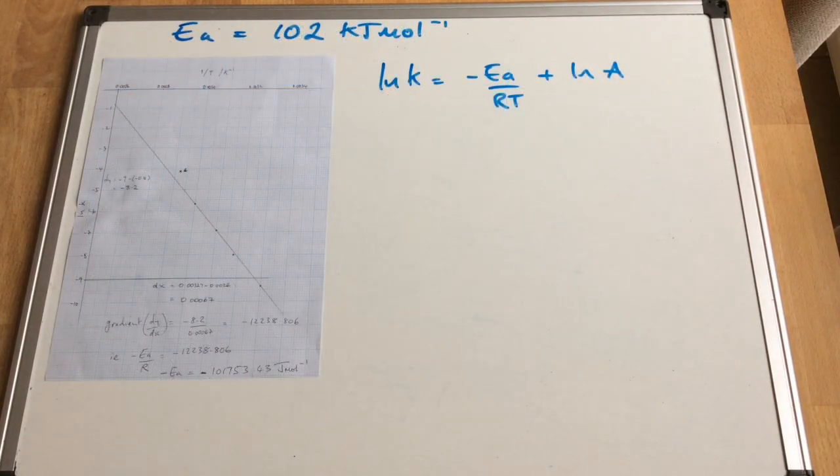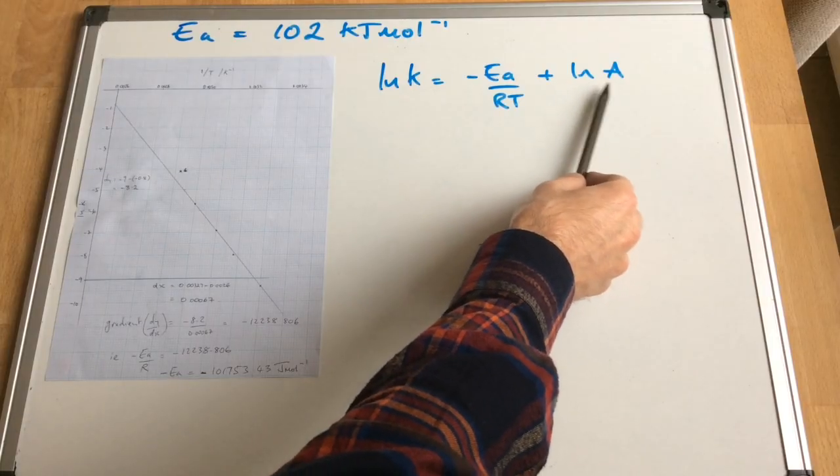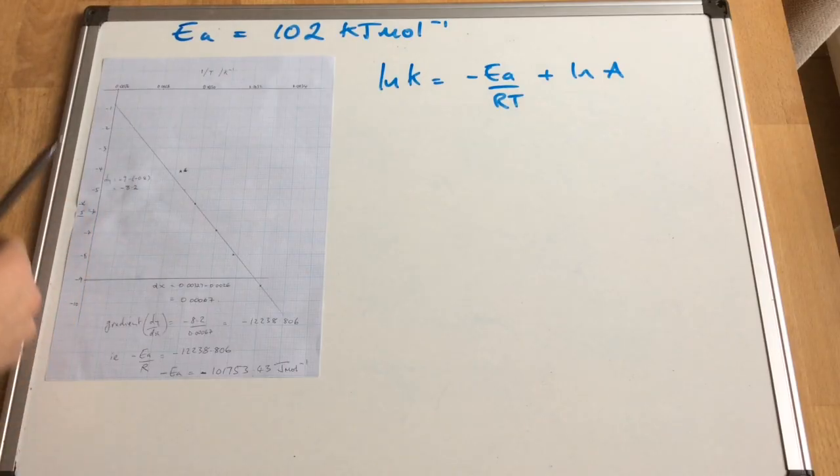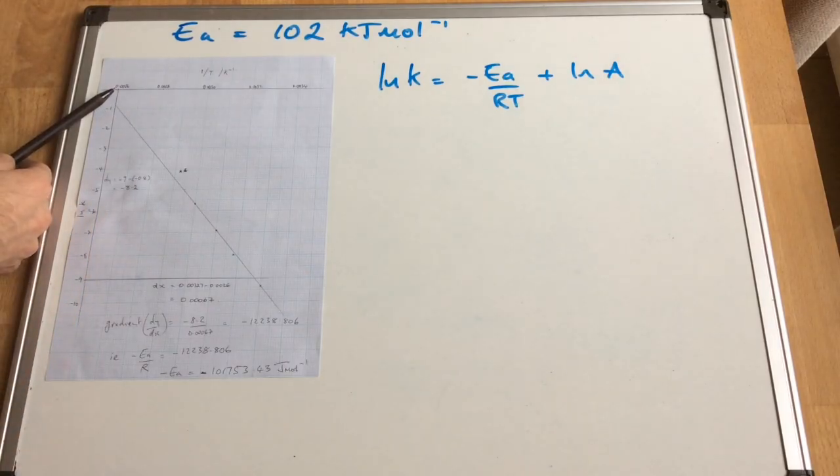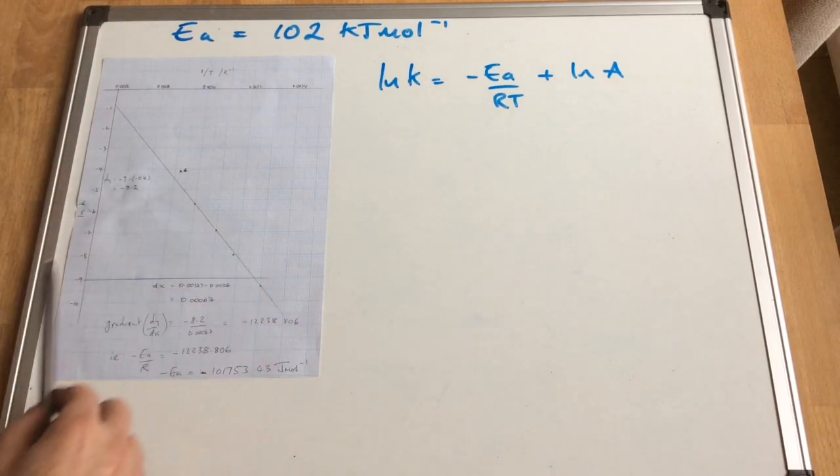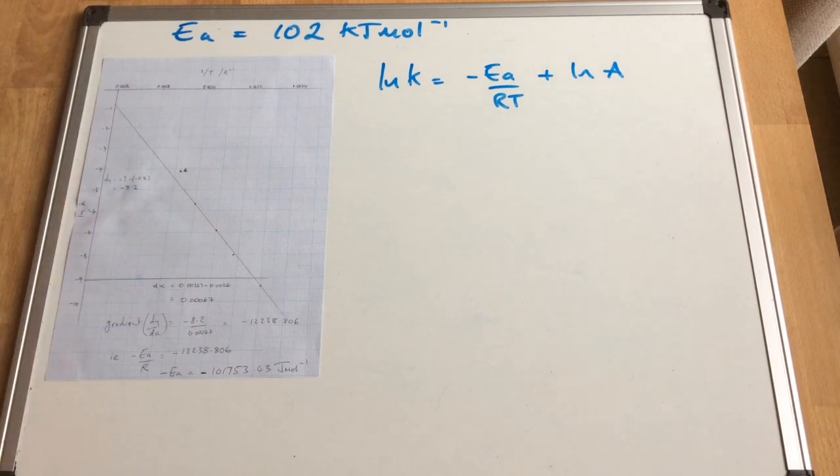So if you remember, the final thing we have to do is calculate the value for the A term, the pre-exponential factor. And we did say that in the y equals mx plus c equation, that the y-intercept is going to give us this ln A term. Now the problem we've got with the graph is I've sort of started my axis, my x-axis, at 0.0026. So we can't do the y-intercept because the y-intercept is obviously where x equals 0.